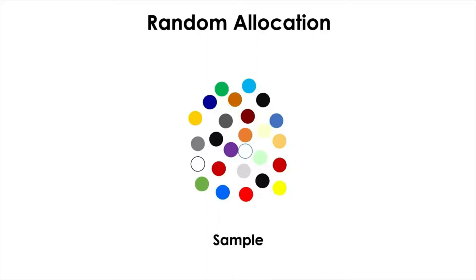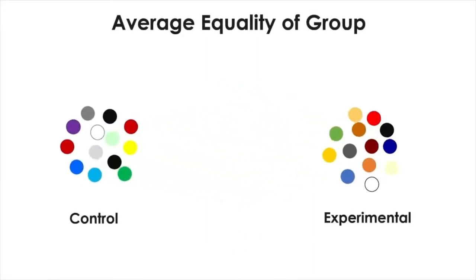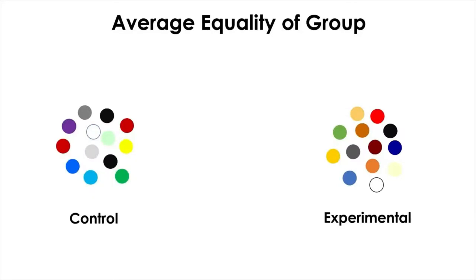We can have a large sample and split them into respective groups using random allocation, hoping that individual differences and extraneous variables we cannot control are spread between groups more or less evenly, to establish baseline comparability. The sample with different colors represents individual differences such as age, sex, and other variables we cannot modify. With random allocation, we hope these individual differences are spread equally over each group, evening them out on average. This is what is meant by random allocation replacing the equality of individuals with the average equality of groups—we approximate this equality through random allocation so we can start the experiment from an equal footing.